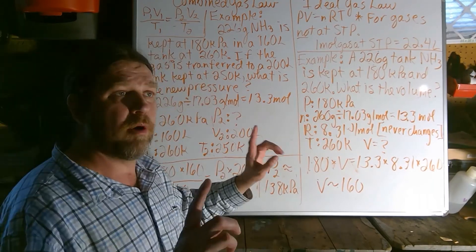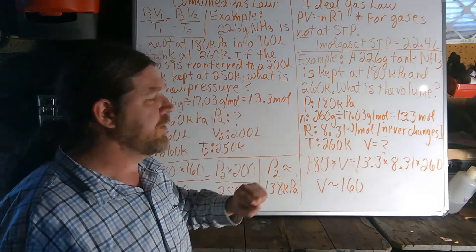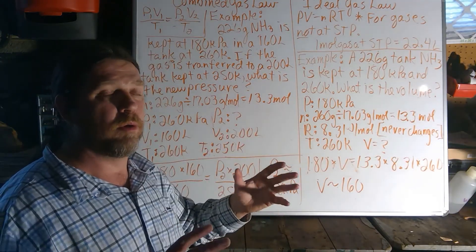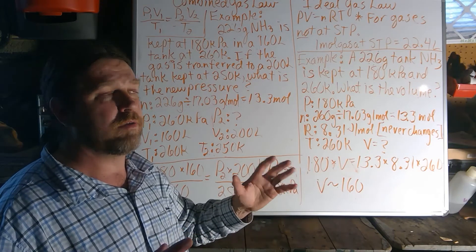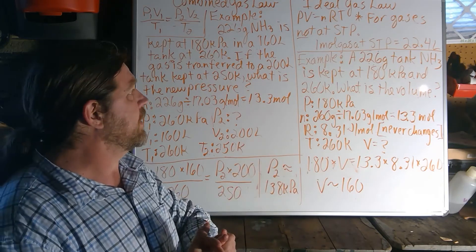Now, if we were looking at pressure and atmosphere, this constant would be different. It would be 0.082, but we're not working with that value this week. We're just going to stick with KPAs.